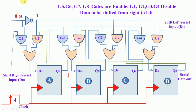To summarize: when the control signal value is 0, the data is shifted from right to left; when the control signal value is 1, the data is shifted from left to right. This is the bi-directional shift register, where shifting can be done in both left and right directions. Thank you.